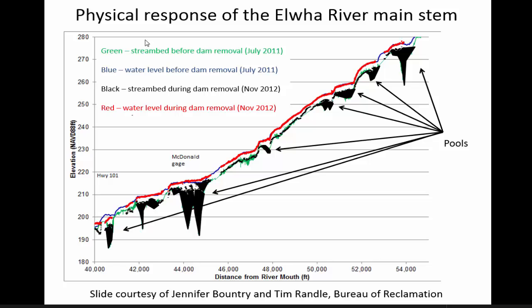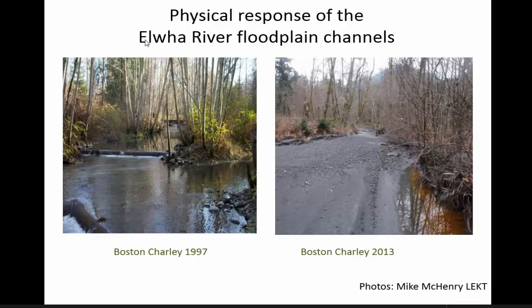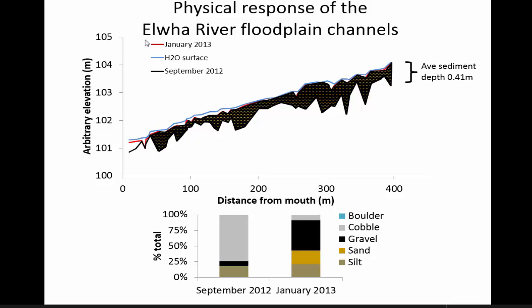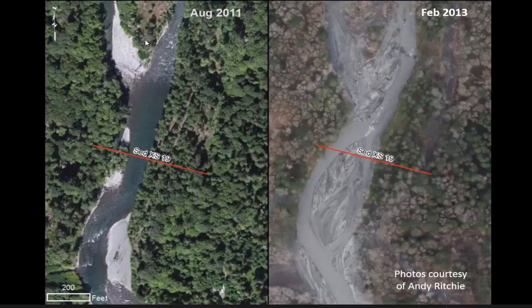Floodplain channels like this location called Boston Charlie looked very different between 1997 and 2013 — a certain amount of sediment definitely filled in the floodplain. The majority of the bed was cobble-sized material — softball to basketball size — and about half a meter of bed filling or aggradation occurred, with gravel coming in as well. For the main river, here we're looking at August 2011 on the left and February 2013 on the right, where you can start seeing large gravel bars developing and an accumulation of wood. Wood is important in river systems because it helps establish fish habitat and stabilize the area.